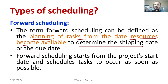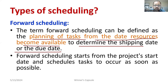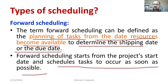When material, machines, and everything is ready, then delivery follows — that particular scheduling is known as forward scheduling. Forward scheduling starts from the project start date and schedules tasks to occur as soon as possible. As soon as you deliver the material, you can start the project work, and then you can estimate when the project will be completed.